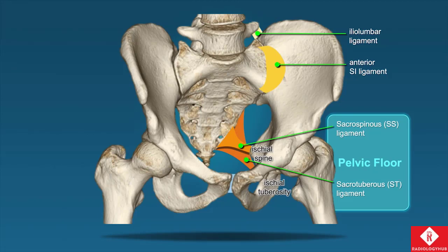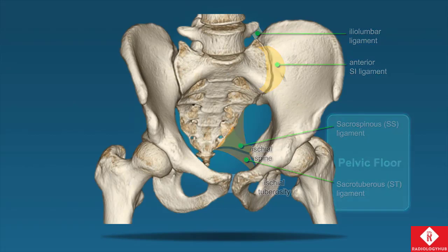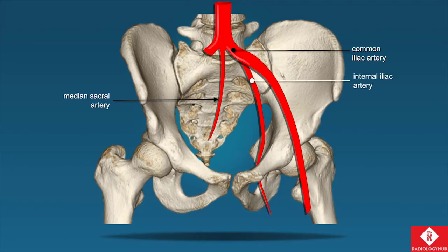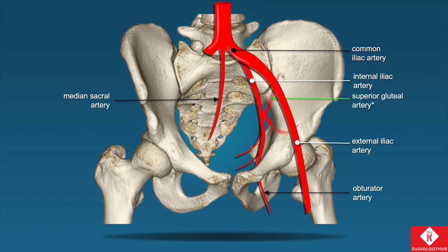Often, injuries that occur posteriorly will have a vertical fracture that displaces the transverse process of L5. When it comes to vascular anatomy, the vessels are mostly related posteriorly, where we see the common iliac artery, the medial and lateral sacral arteries. The internal iliac splits from the common, giving rise to the obturator artery, internal pudendal, and visceral branches. More posteriorly, the superior and inferior gluteal arteries tuck in underneath the greater sciatic notch, putting those vessels at risk when a fracture extends through that region.